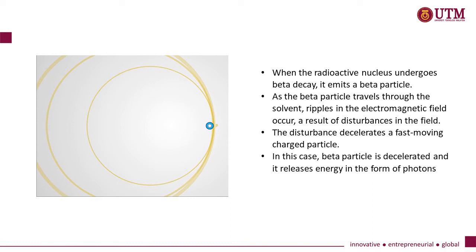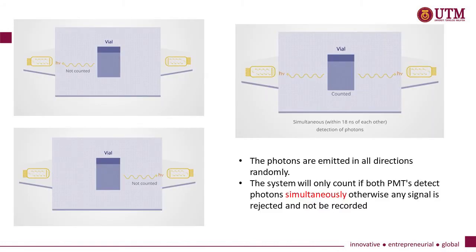The disturbance decelerates the fast-moving charged particle. In this case, the beta particle is decelerated and it releases energy in the form of photons. The photons are emitted in all directions randomly. The system will only count if both PMTs detect photons simultaneously; otherwise any signal is rejected and not recorded.